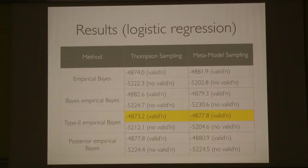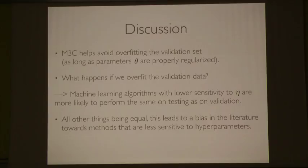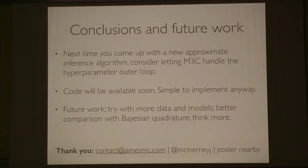There's more discussion — please come to the poster. My conclusions: next time you come up with a new approximate inference algorithm, consider letting M3C handle the hyperparameter outer loop. It's simple to implement, and in the future I'll try it on other models and connect it more deeply with Bayesian quadrature. Thanks very much.